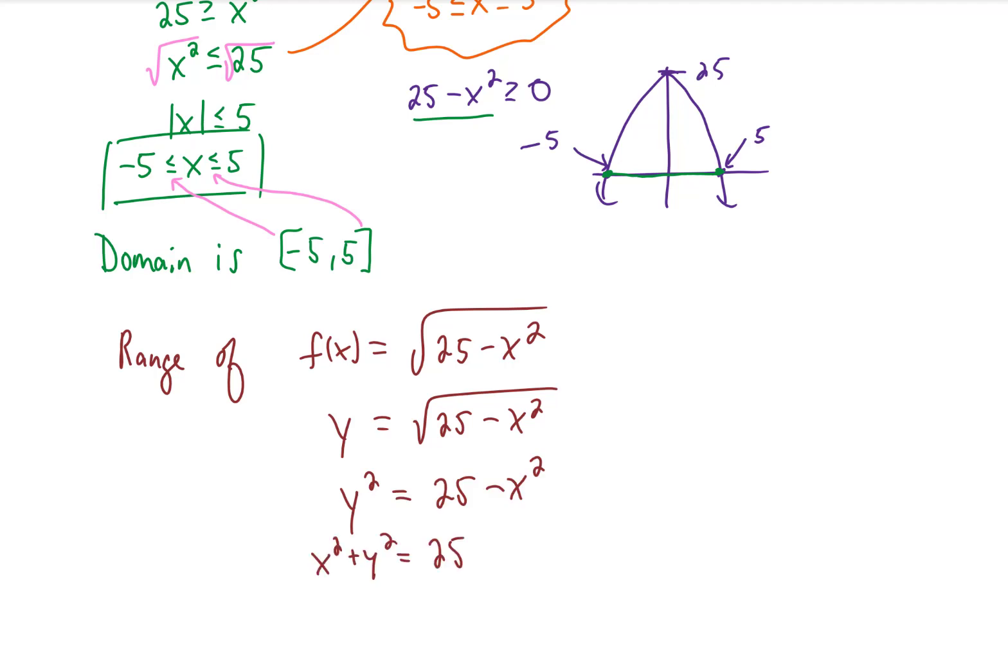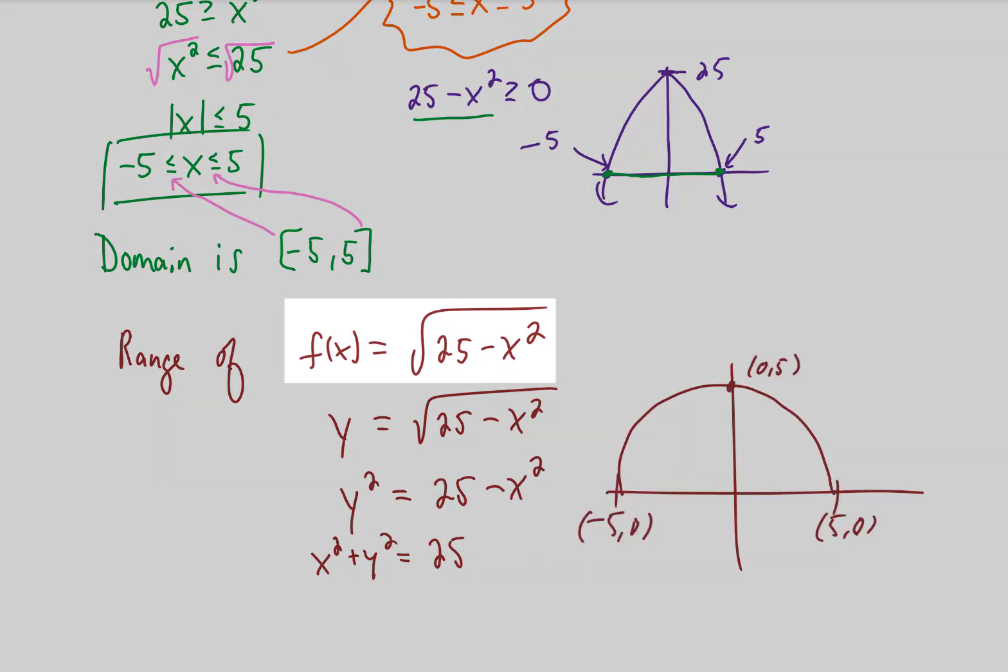And you might realize that this function is actually a circle, or more specifically a semicircle, because this here is a function that needs to pass the vertical line test, so a circle isn't kosher here. Because you'll notice there's not a plus or minus in front of this square root, we're just taking the half of this circle whose y values are positive. So anyway, you can see from this graph that the range, or the y values of this function, go from y equals 0 all the way up to y equals 5.